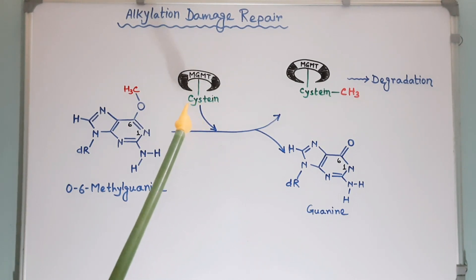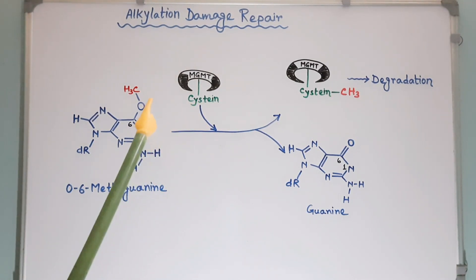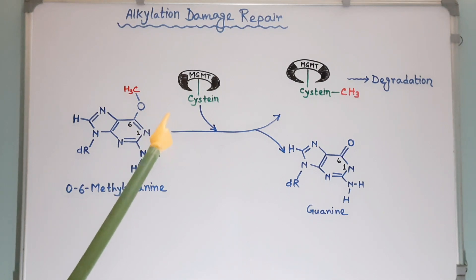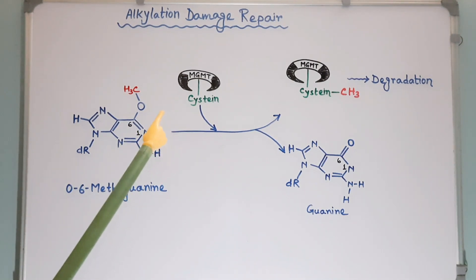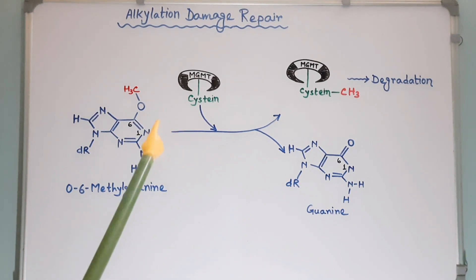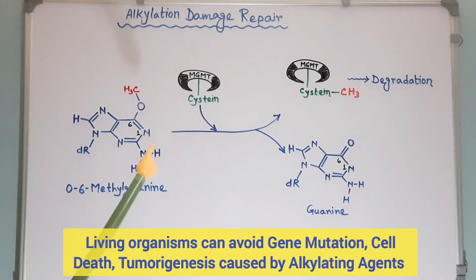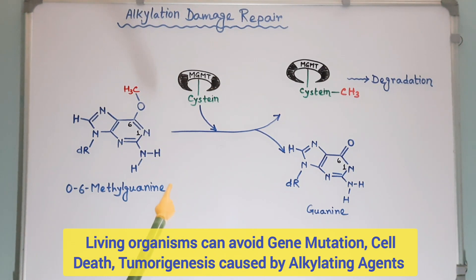The repair proteins remove ethyl, methyl, and even larger alkyl groups from different positions of bases in DNA. In this way, living organisms can avoid gene mutation, cell death, and tumorigenesis caused by alkylating agents.